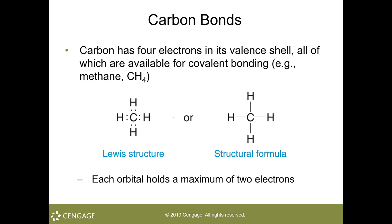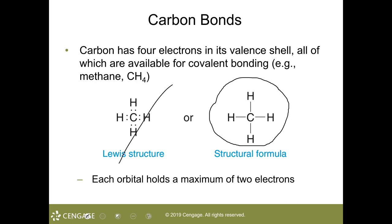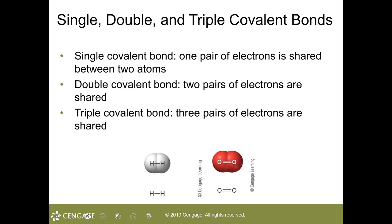Methane gas is CH4. The way I typically draw this on the board shows those lines indicating those covalent bonds. There's nothing wrong with the Lewis dot structure — I just don't typically illustrate mine that way. Covalent bonds can be a single, double, or even triple bond, indicating the pairing of those electrons to yield or at least provide that bond.